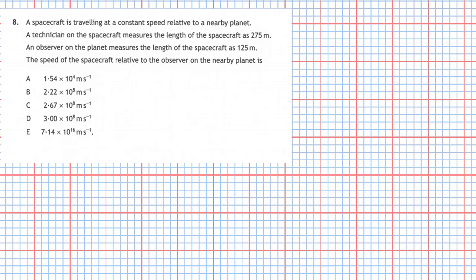We go to our data book, look up our relativistic equations, and we have this one: l-prime is equal to l times the square root of one minus (v/c) squared. Now, u is the relative speed of the spacecraft compared to the planet, and c is the speed of light.